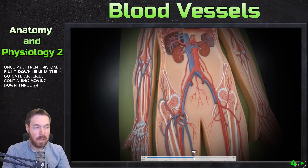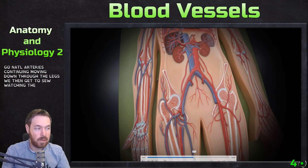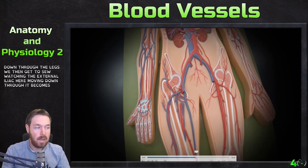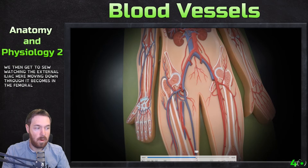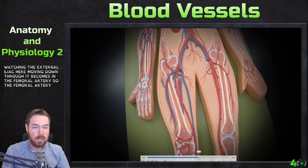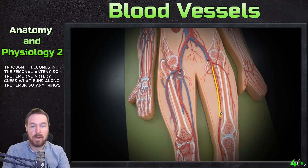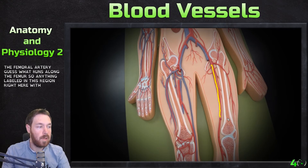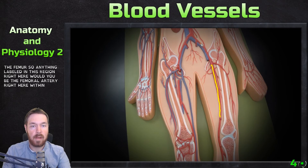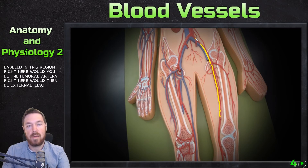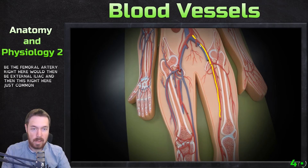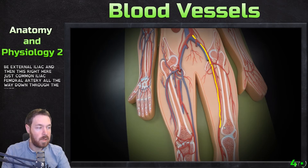Moving down through the legs, the external iliac becomes the femoral artery — which, as you'd guess, runs along the femur. The region labeled here is the femoral artery; above that would be the external iliac, and above that is the common iliac.